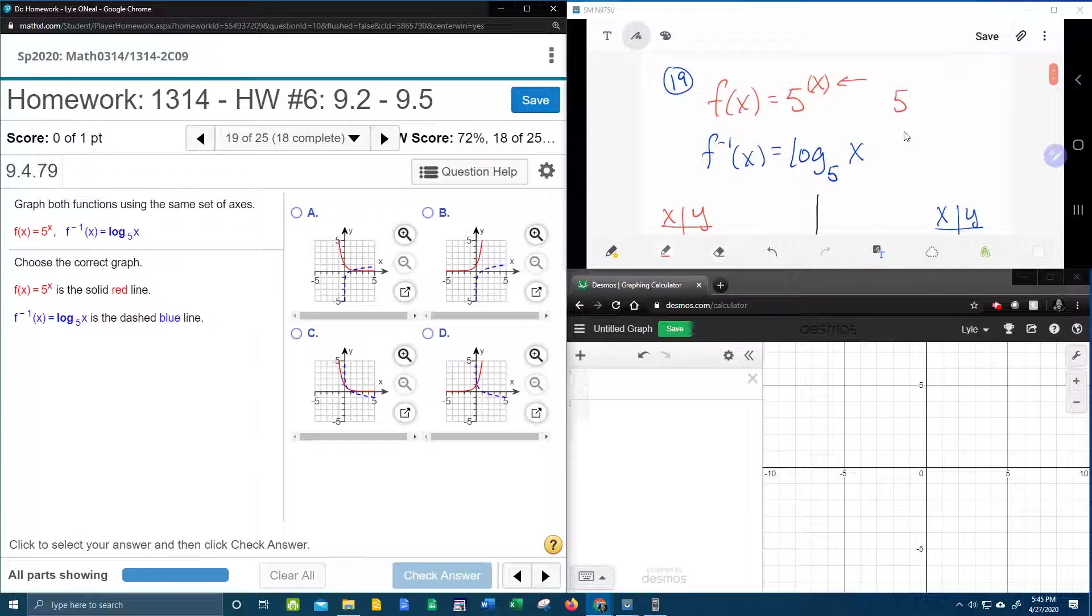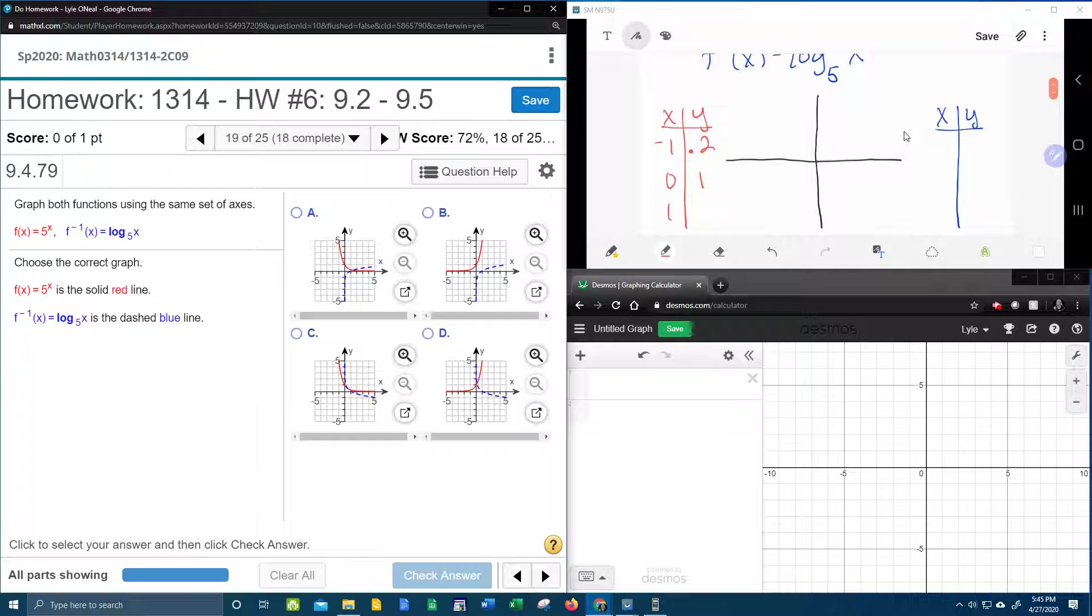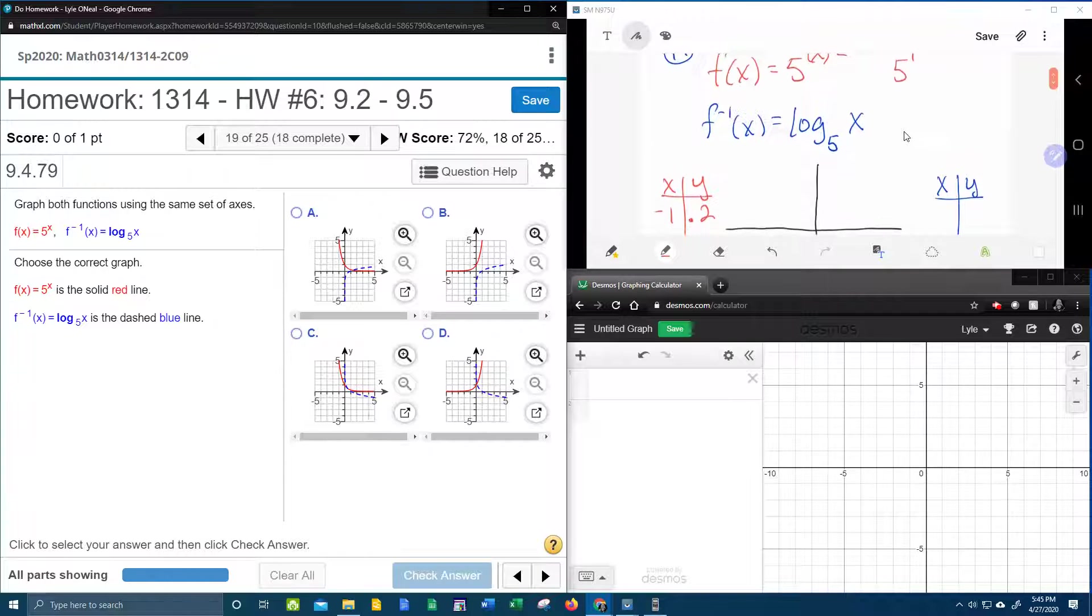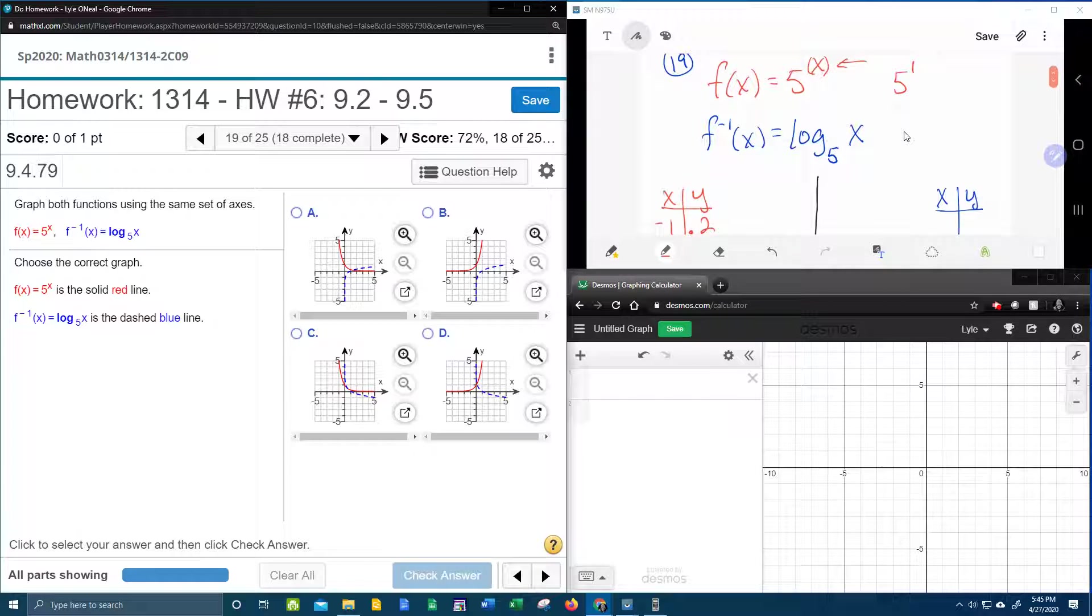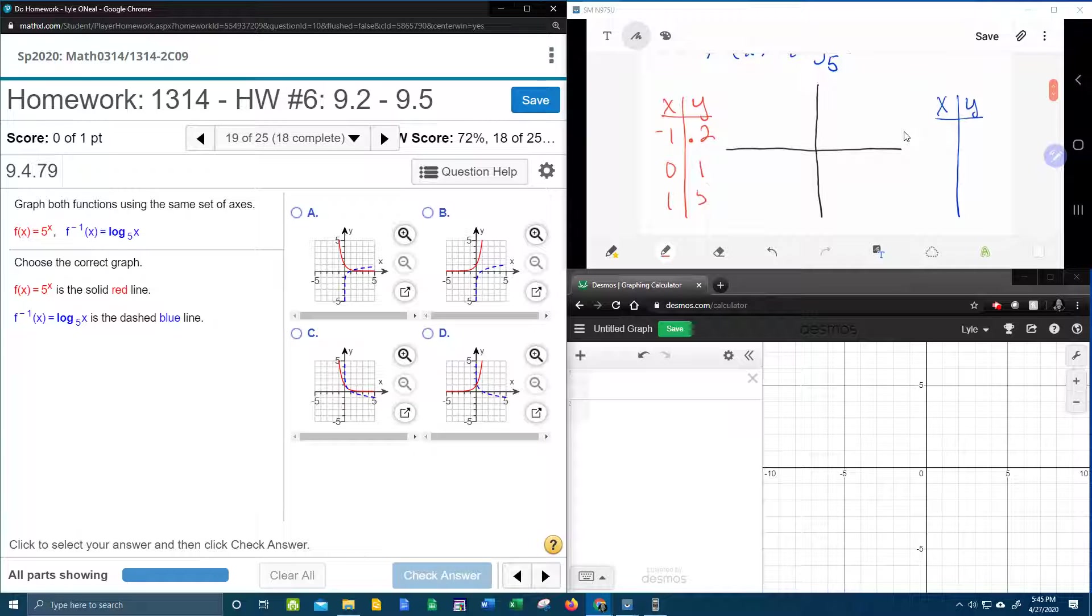And then we need to calculate 5 to the 1 power, because we're doing x is 1. How about this? Anything to the 1 power is itself. So 5 to the 1 should be 5.